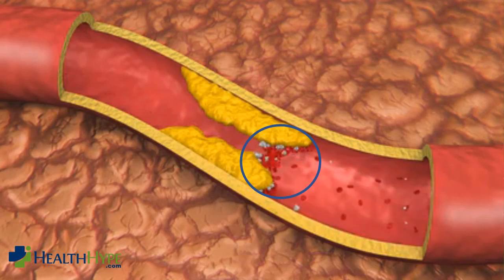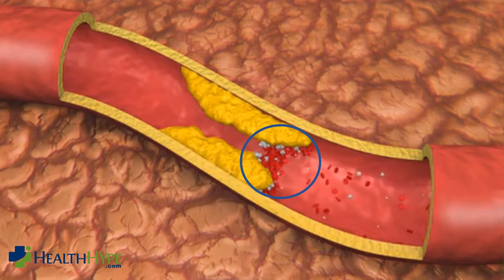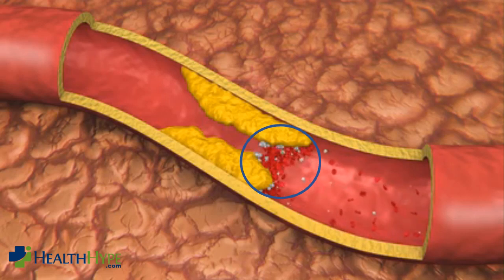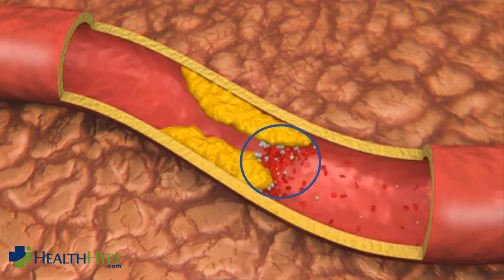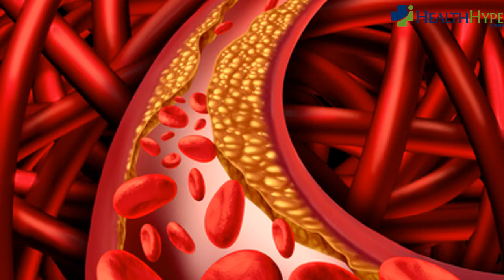The blood clot blocks the already narrowed vessel and blood flow is then totally obstructed. Organs that lie beyond this blockage therefore do not receive sufficient oxygen and nutrients for survival. One of the areas where this often occurs is in the heart, and this can result in a heart attack.